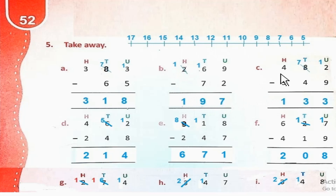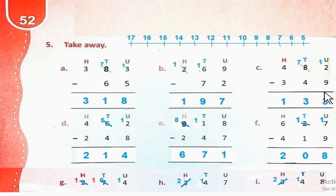Part C: 482 minus 349. 2 से 9 को नहीं निकाला जा सकता। So हम 8 से 1 ten borrow करेंगे — यह 7 रह जाएगा, और यह 12 हो जाएगा। 12 minus 9 = 3. 7 minus 4 = 3. 4 minus 3 = 1. So the answer is 133.